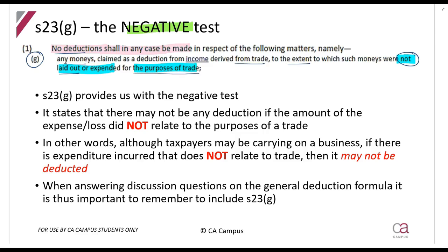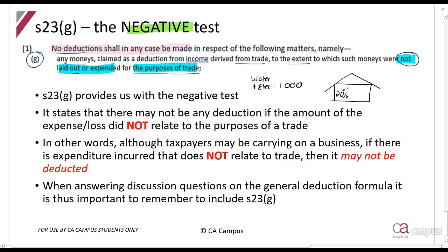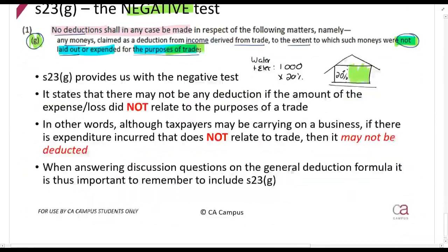Here is an example: a doctor owns a house and converts 20% of it into consulting rooms. If the doctor incurs water and electricity costs of one thousand rands, the doctor can claim 20% of that cost, because 20% of the house is used for business. Section 23g is what tells us that the remaining 80% cannot be claimed as a deduction, because it was not used for trade. We will now start exploring each of these different elements and what they mean.